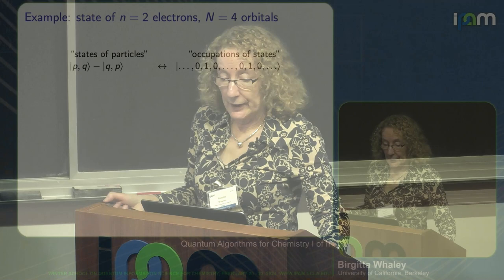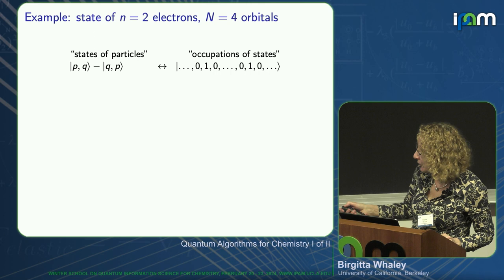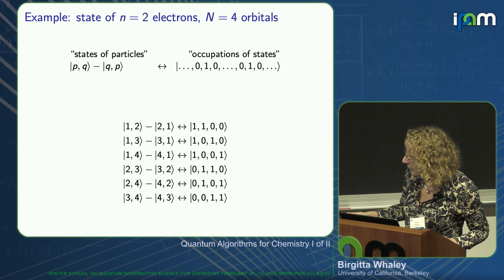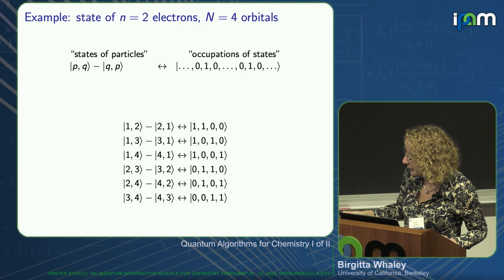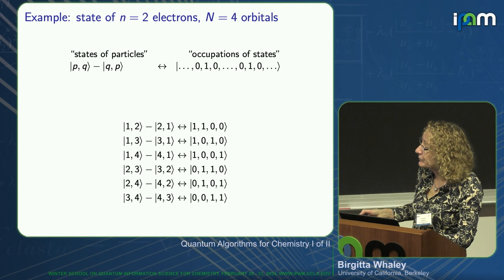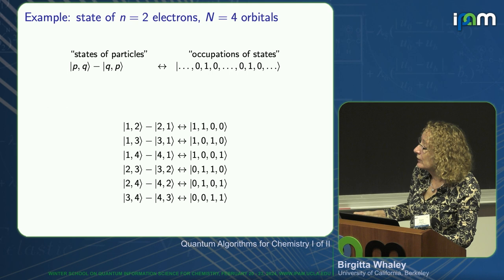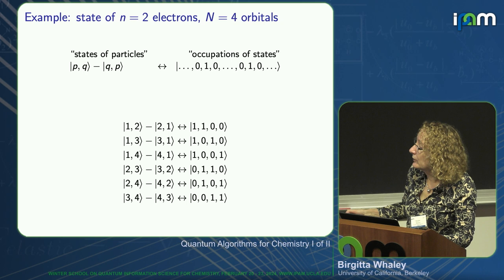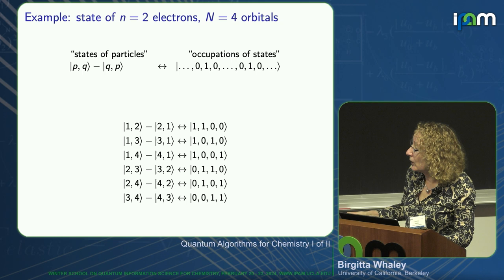For example, if we have two electrons and four orbitals, the antisymmetrized states translate to occupations of all the states. If we have four orbitals, with the two particles in orbitals one and two, we write that as an occupation vector: 1, 1, 0, 0. If the particles are in states one and three, antisymmetrized, we write that in the occupation representation as 1, 0, 1, 0. If they are in states one and four, the state is represented as 1, 0, 0, 1, and so on.